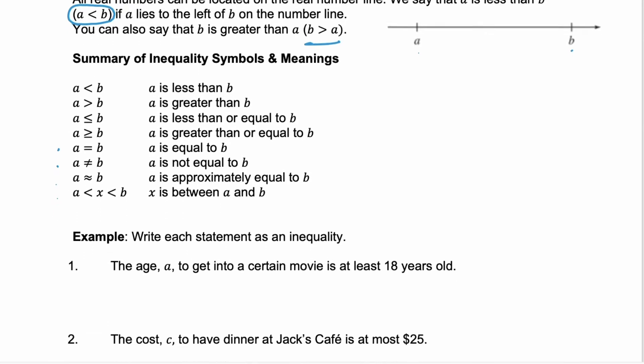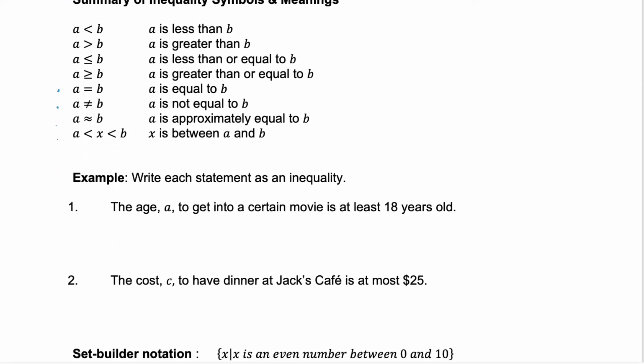Let's look at two examples where we're going to write the statements as inequalities. In example one, we're told the age a to get into a certain movie is at least 18 years old. We have two key pieces of information: our variable a and the number 18. Now we need to determine which inequality symbol to use. At least—can this individual that is 18 go to the movie? Yes, so we know that being equal to 18 is possible. Now we need to know, do you have to be older than or greater than 18, or can you be less than 18? Well, if you have to be at least 18, you can be 18, 19, 20, etc. You need to be older. So here it's a greater than or equal to. So the age has to be greater than or equal to 18.